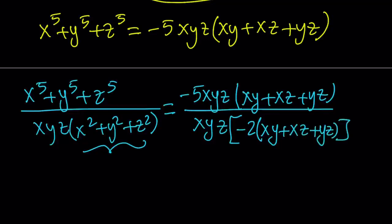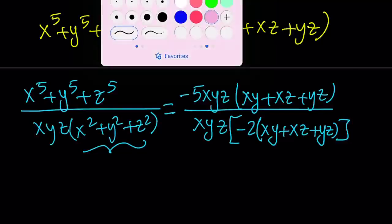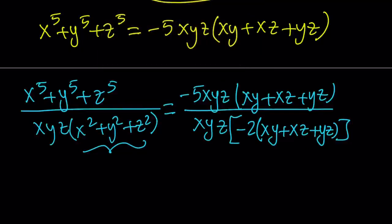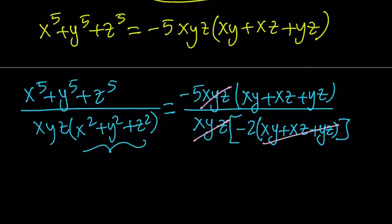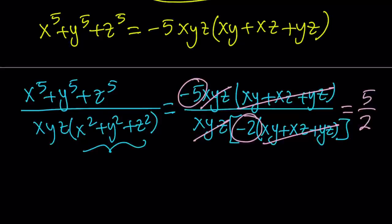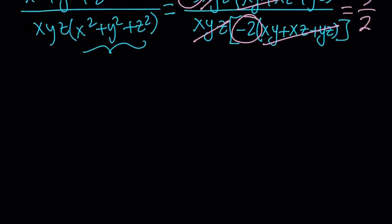This turns into negative 2xyz times xy plus xz plus yz in the denominator. Then xyz cancels out, and the quantity xy plus xz plus yz completely cancels out — provided you don't want them to be zero or undefined. This gives us negative 5 divided by negative 2, which equals 5 halves as the final answer. We get a numerical value regardless of the values of x, y, z. Now let's take a look at the second method.